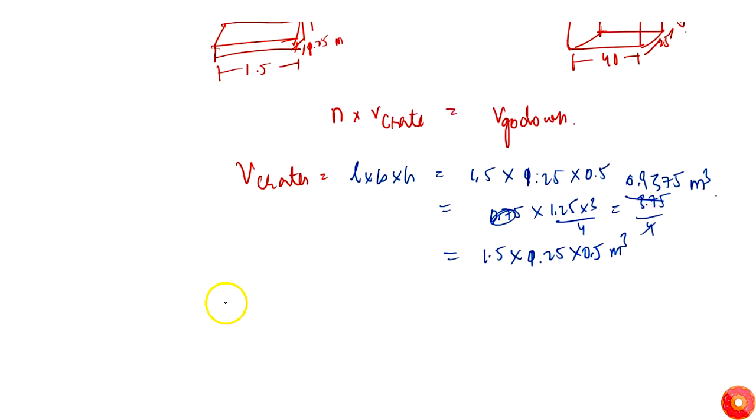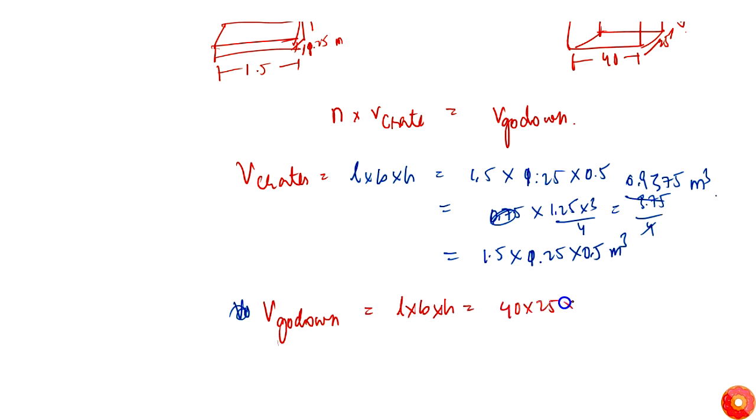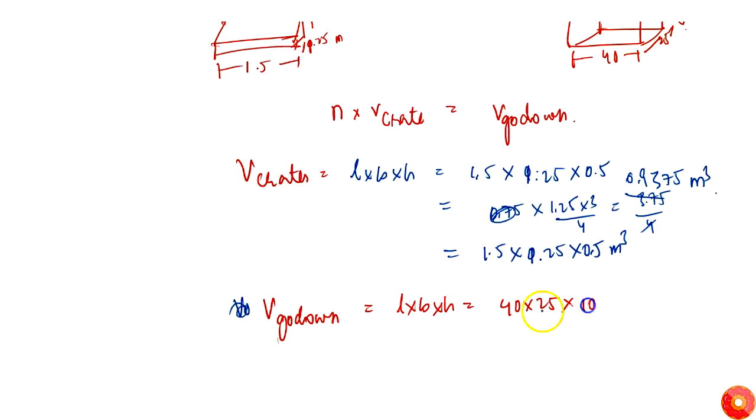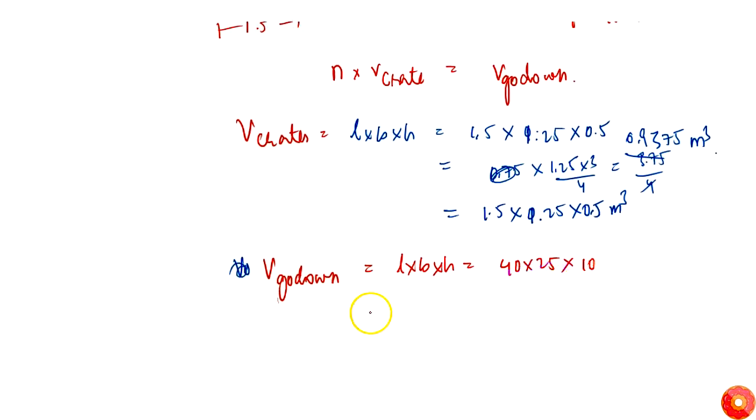Now we need to find volume of go-down. So volume of go-down will be equal to length into breadth into height. This is simply 40 into 25 into 10. This we know now.